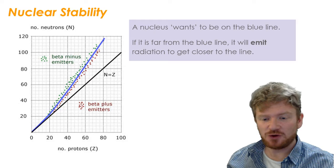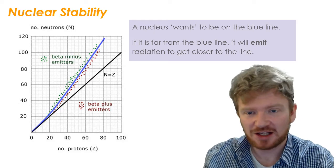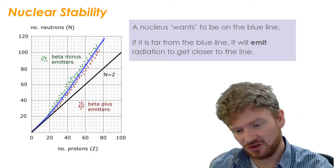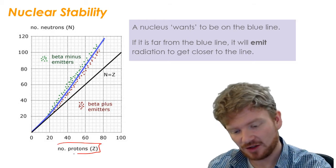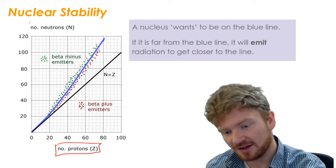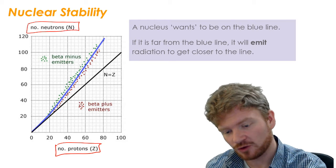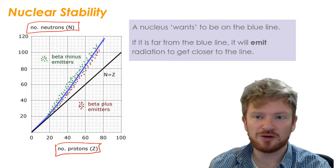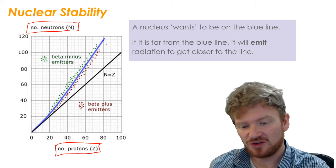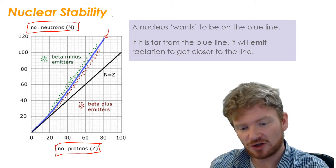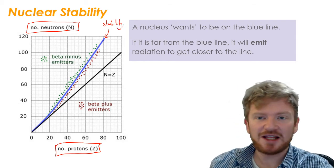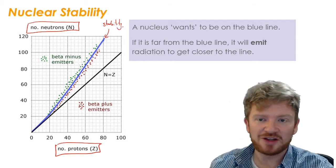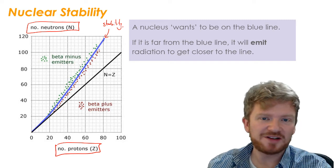So, if you remember, what we did in the lesson was we looked at this NZ graph. So we have Z is the number of protons and N is the number of neutrons. And when we plot a load of elements on there, we see that it follows this curve, which is called the stability curve. So, if an element exists sitting on this blue line, then we call it stable.